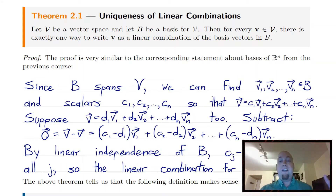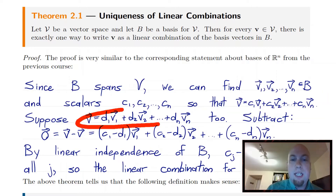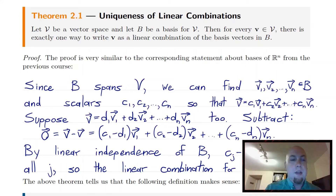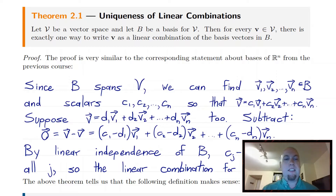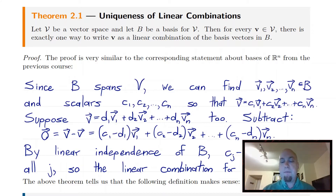We've already used spanning, so now we use linear independence. We've got two equations for v — this one and this one — and we're going to subtract them from each other and see what we get. If we subtract them, in other words if we do v minus v in two different ways, well, one way v minus v is just the zero vector. But if we do this linear combination minus this linear combination, we get an expression on the right: a linear combination of v1 up to vn, where the coefficients are the c's minus the d's.